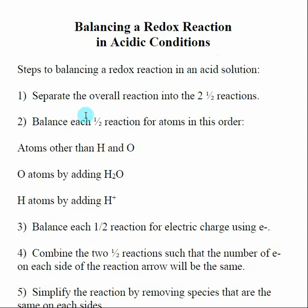The first thing you want to do is separate the overall reaction into the two half reactions — the oxidation and the reduction. You're looking for the same species on the left-hand side of the arrow as on the right-hand side. Once you do this, balance atoms other than hydrogen and oxygen first. For example, balance the number of irons on each side of the arrow. Then balance oxygens — but not by adding bare O atoms. You balance oxygens by adding water molecules.